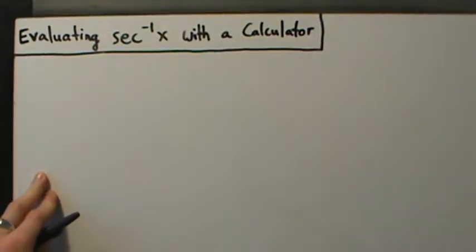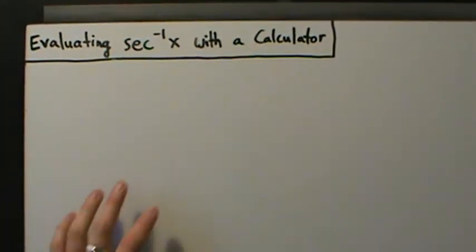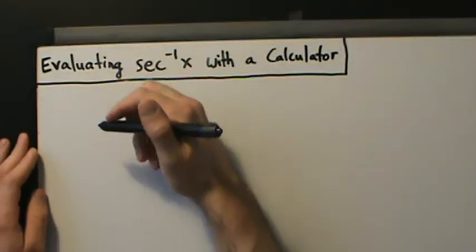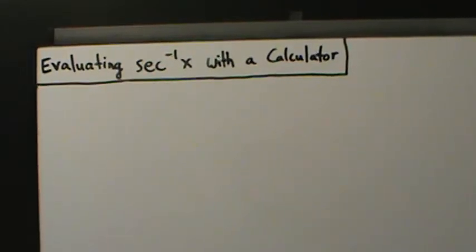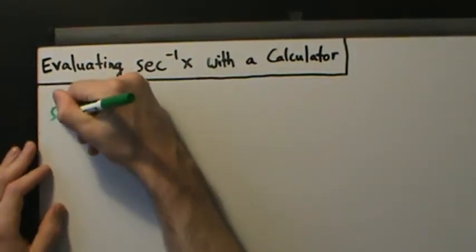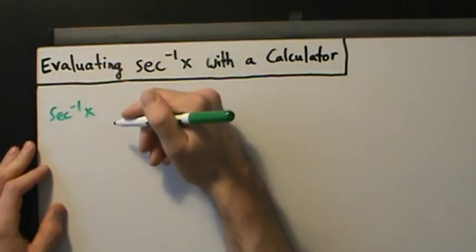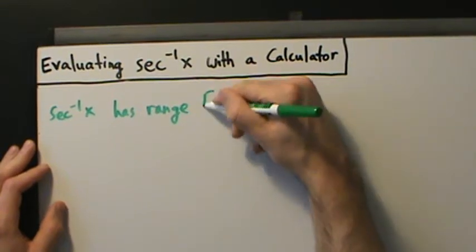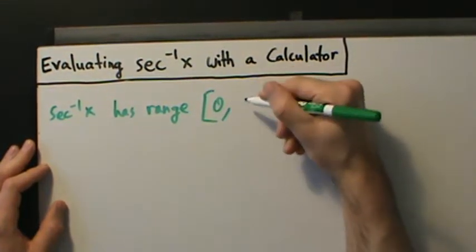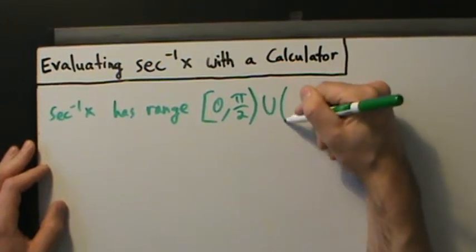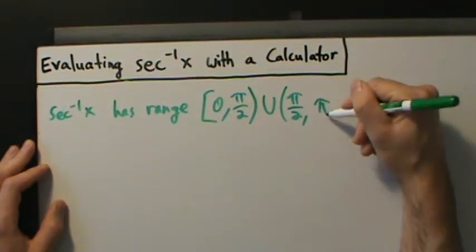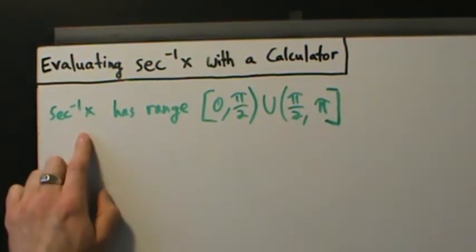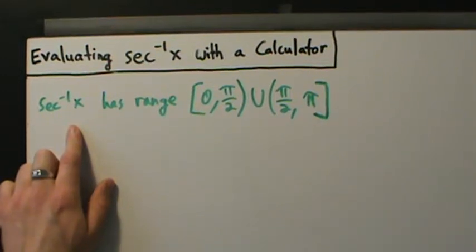What we are going to do is find a different relationship between inverse secant and inverse cosine. To do that, we first need to remember what the range of both of those functions is. The inverse secant of x has range 0 to pi over 2, union pi over 2 to pi. Remember, when you evaluate an inverse trig function, your answer can be interpreted as an angle on the unit circle.